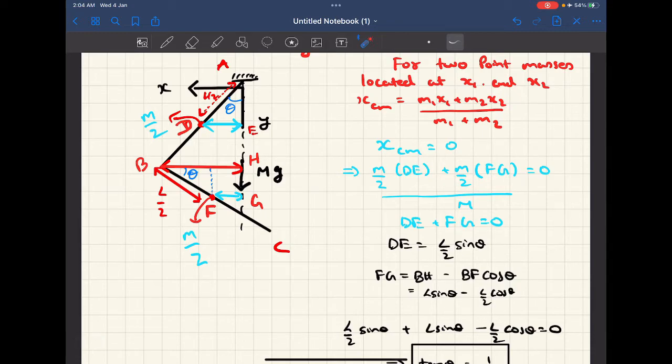Now in this question, the basic crux of solving this problem is we're going to break this rod and this rod as two independent bodies and we're going to place this mass of this entire body. I have assumed that it has a mass of m by 2.